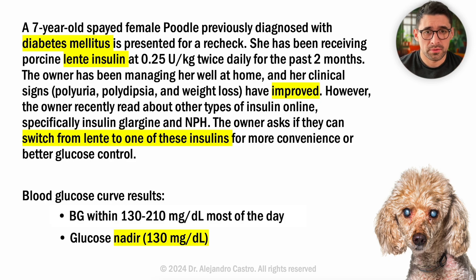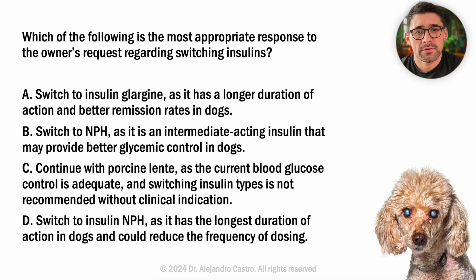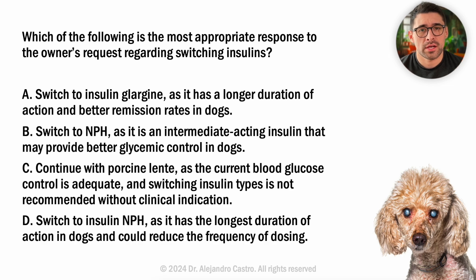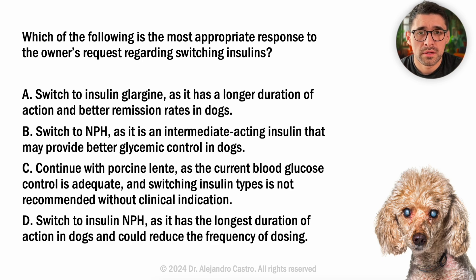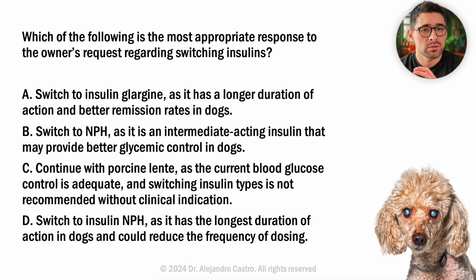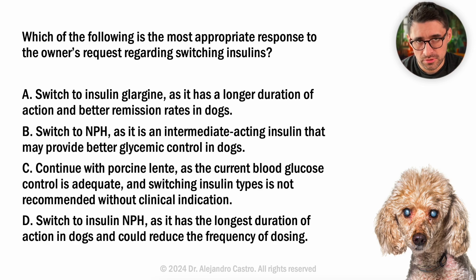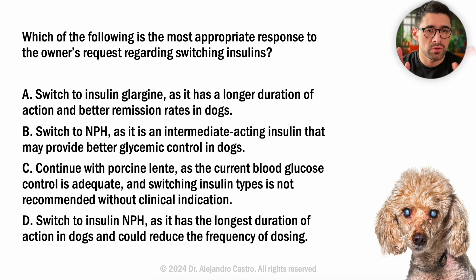Let's see the potential answers. A: switch to insulin glargine, as it has a longer duration of action and better remission rates in dogs. B: switch to NPH, as it is an intermediate-acting insulin that might provide better glycemic control in dogs. C: continue with Lente, as the current blood glucose control is adequate and switching insulin types is not recommended without clinical indication. D: switch to insulin NPH as it has the longest duration of action in dogs and could reduce the frequency of dosing.